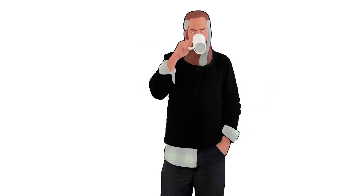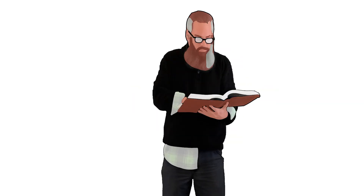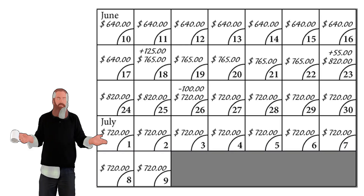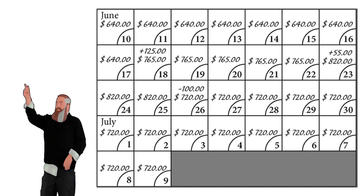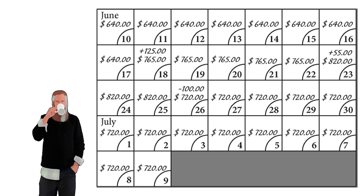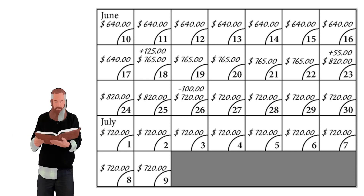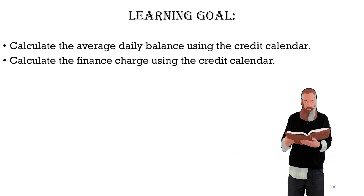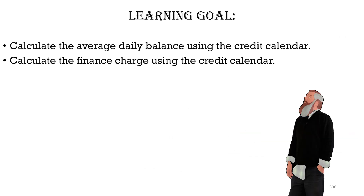The finance charge is computed on any statement in which the consumer has a previous unpaid balance. It is based on the average amount the consumer owed each day of the billing cycle — the average daily balance. The average daily balance is used with the monthly periodic rate to determine the finance charge. Billing cycles and interest rates differ from card to card. Here, we'll learn to calculate the average daily balance using a credit card billing calendar, often called a credit calendar.